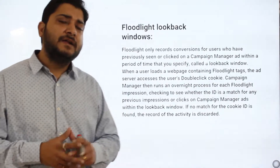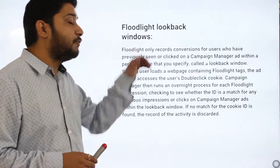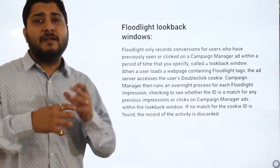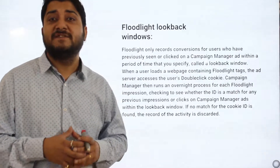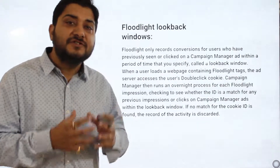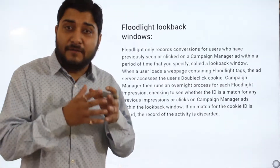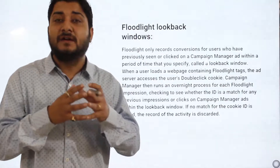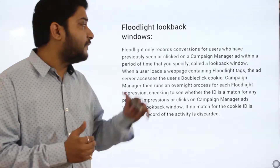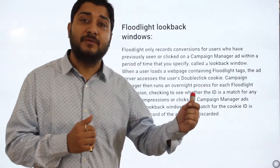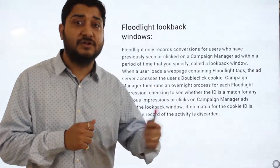Hi everyone, now we'll start a new topic: Floodlight Look Back Window. In my previous tutorials I have explained what is the function of Floodlight and different types of Floodlight available within DoubleClick Campaign Manager. One of the functions of Floodlight is to attribute — meaning, to provide credit to the different campaigns which are performing.